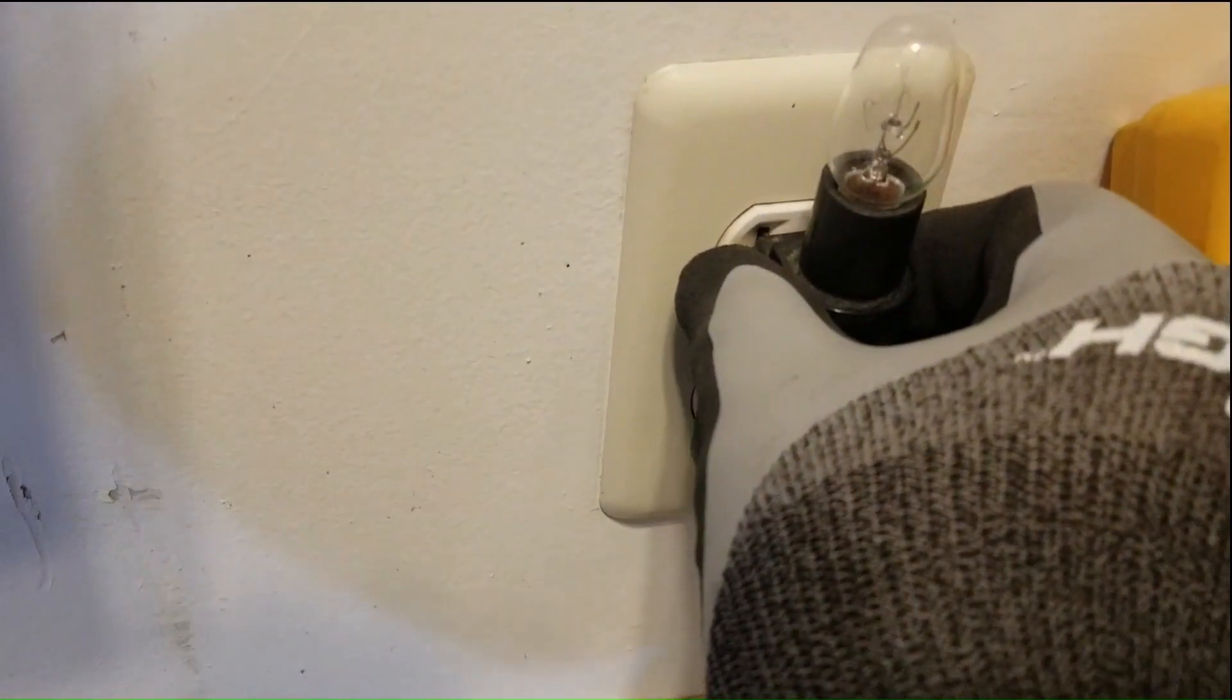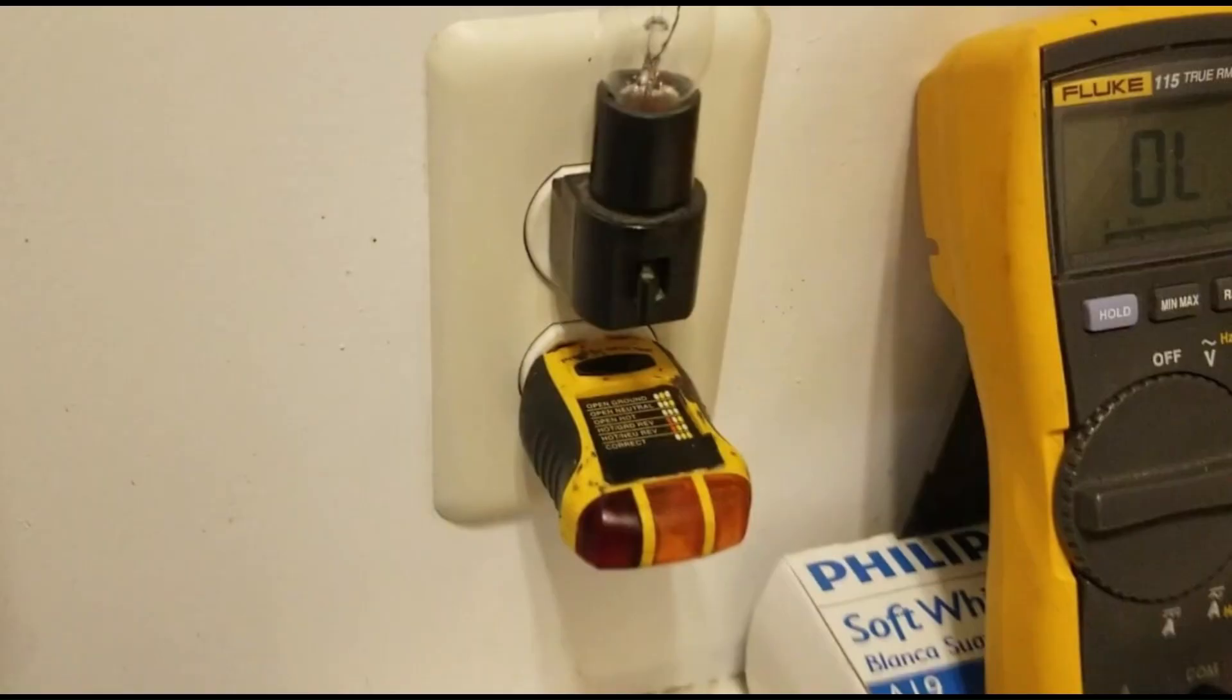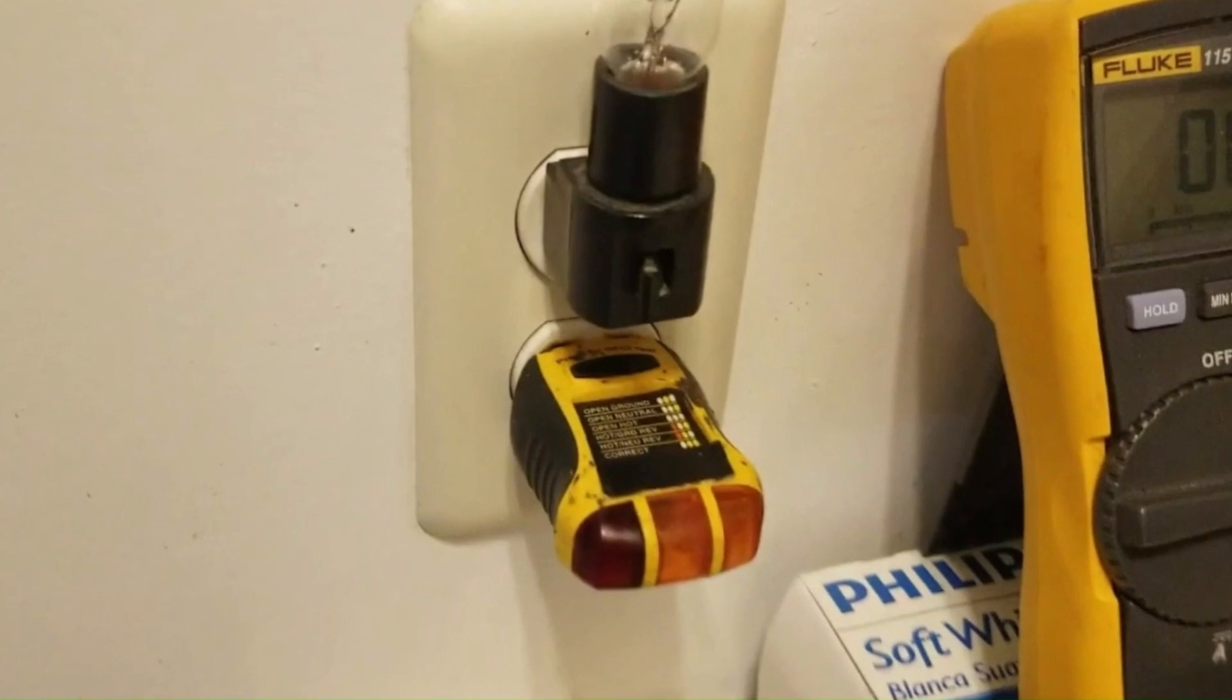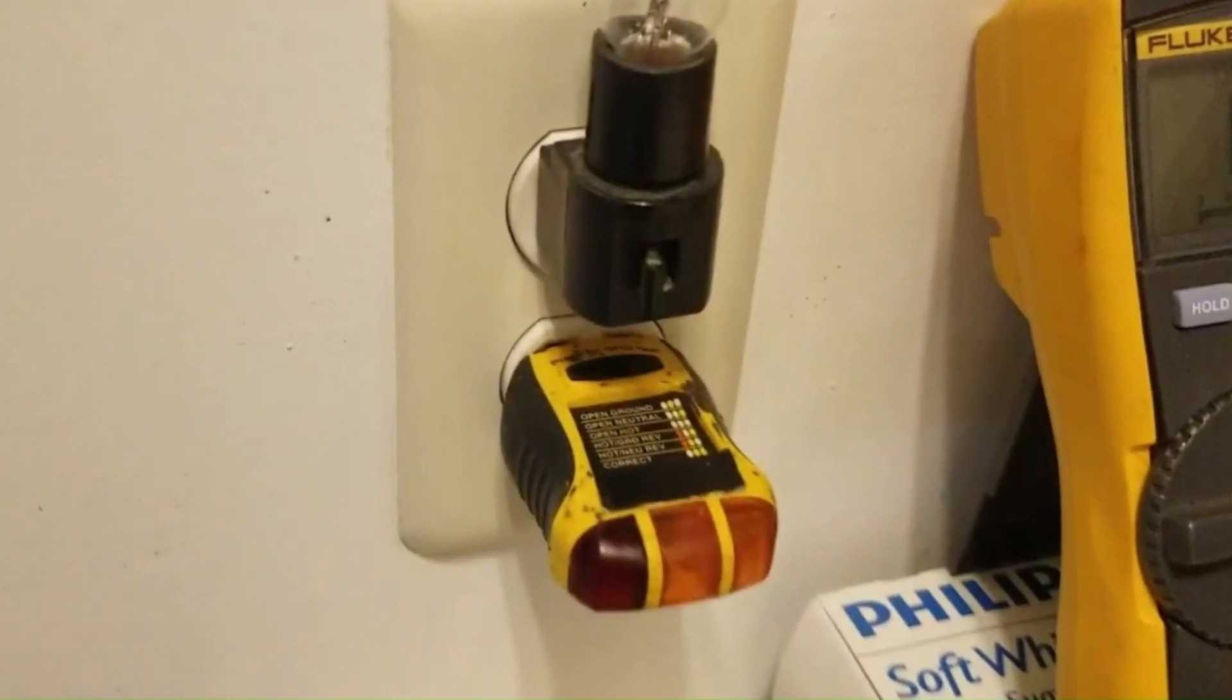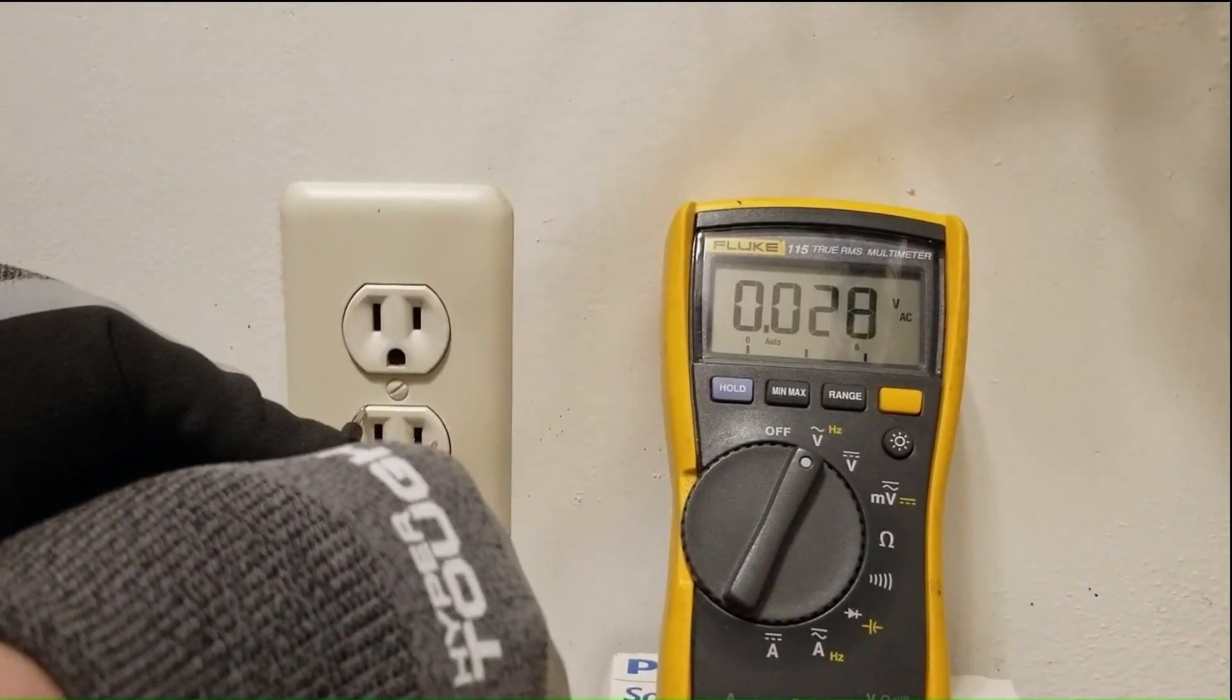So how could this be? As it turns out, this outlet has a loose upstream connection which results in a false reading on the voltage tester. Notice when I measure the voltage with this multimeter,